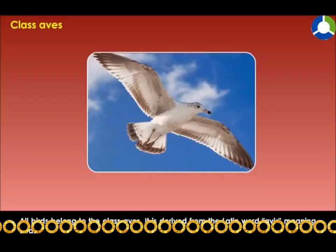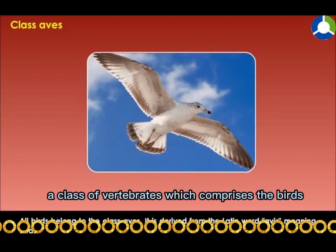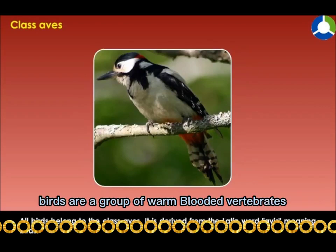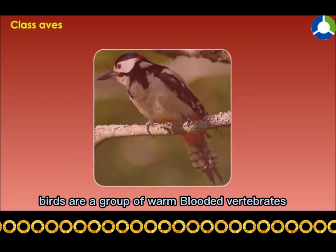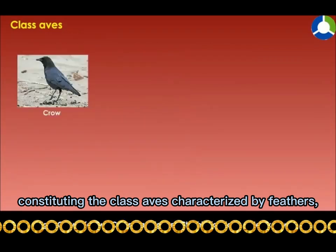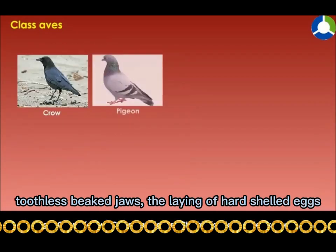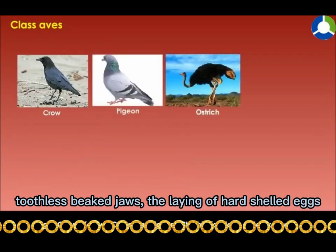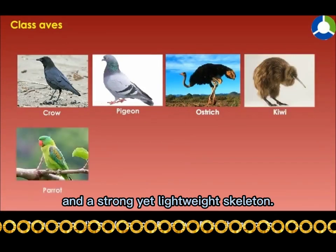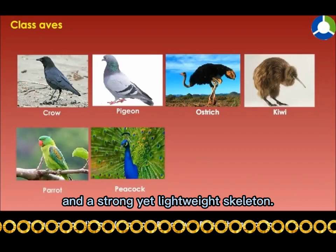Aves — a class of vertebrates which comprises the birds. Birds are a group of warm-blooded vertebrates constituting the class Aves, characterized by feathers, toothless beak jaws, the laying of hard-shelled eggs, a high metabolic rate, a four-chambered heart, and a strong yet lightweight skeleton.